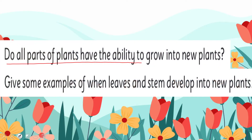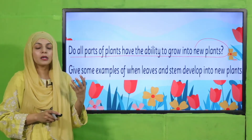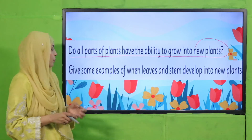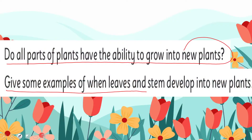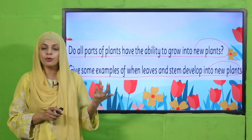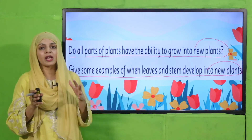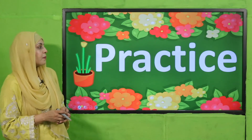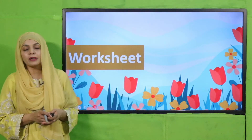Evaluation — quickly answer: Do all parts of plants have the ability to grow into a new plant? No, not all parts, but yes — leaves, stem, and roots all have the ability to grow into a new plant. Give some examples: the stem of a rose plant develops into a new plant, and aloe vera leaves develop into a new plant. These are examples of stems and leaves that grow into a new plant.